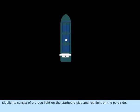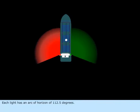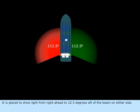Side lights consist of a green light on the starboard side and red light on the port side. Each light has an arc horizon of 112.5 degrees. It is placed to show light from right ahead to 22.5 degrees aft of the beam on either side.